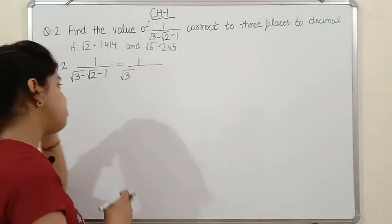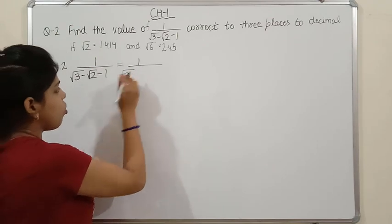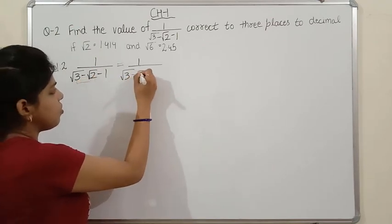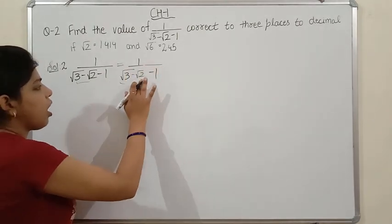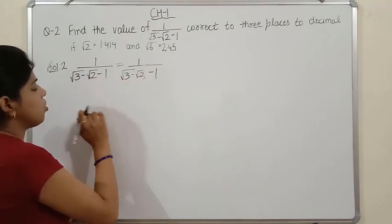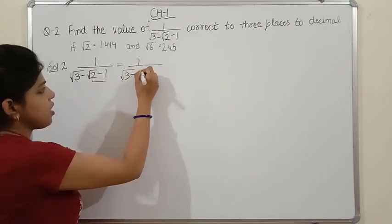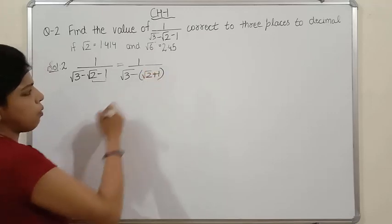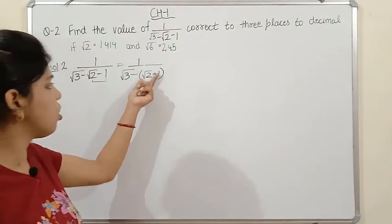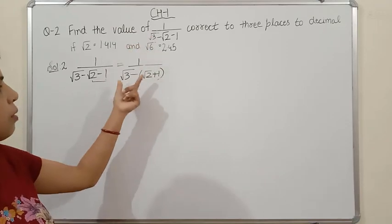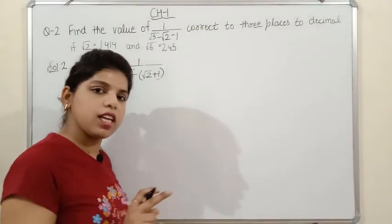What we do is convert it into two terms. Since both signs are minus, we pair the first two terms together and treat -1 separately. Or you can take common minus from the last two terms, giving -(√2+1) inside. So you pair either the first two or last two terms, making the three-term denominator look like two terms, which makes rationalizing easier.